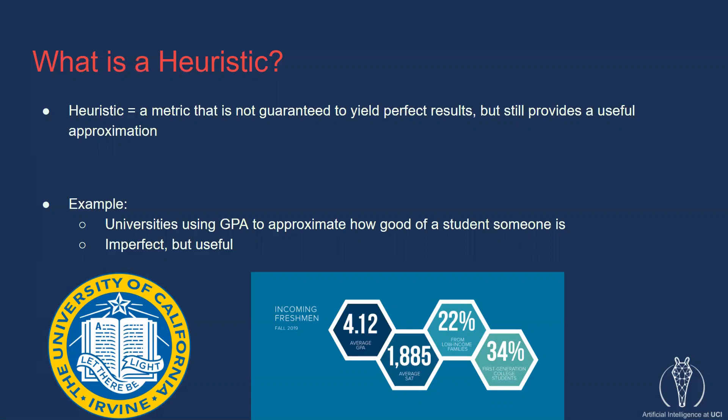An example is GPA. When a university asks for your GPA, they really want to know, is this person a good student? Since universities don't have the time nor resources to do a full-on investigation of you, they instead rely on the imperfect but useful approximation that is your GPA.